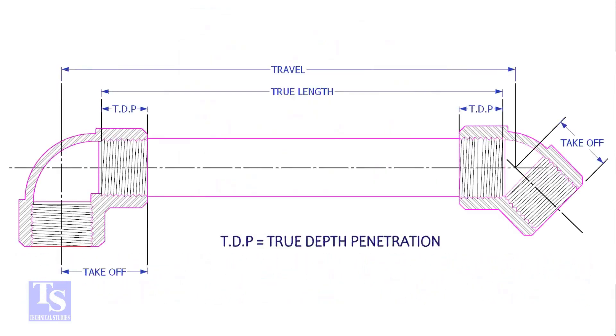To calculate the true length of a threaded pipe, we need to know four things: the travel length, the takeoff length, the TDP (the true depth penetration), and the pressure temperature rating.